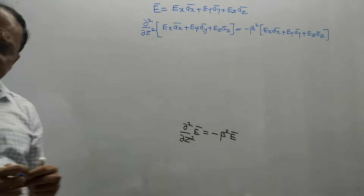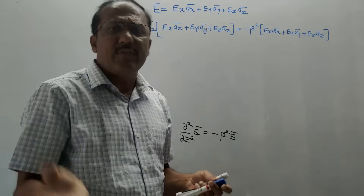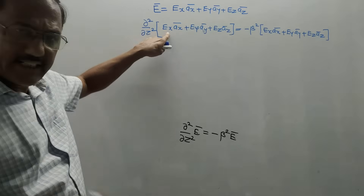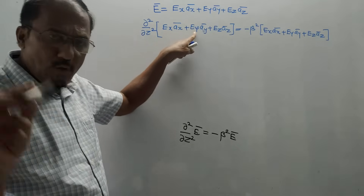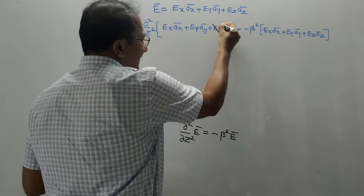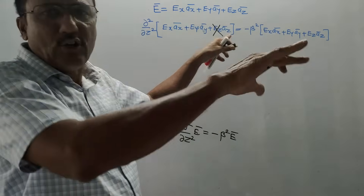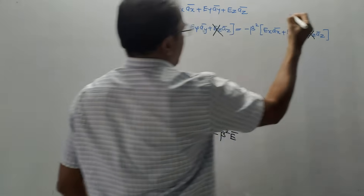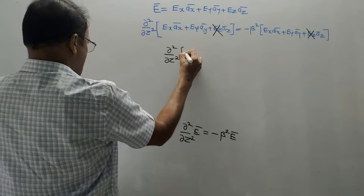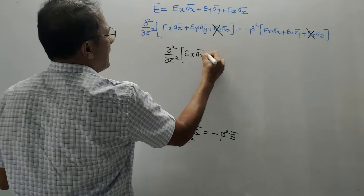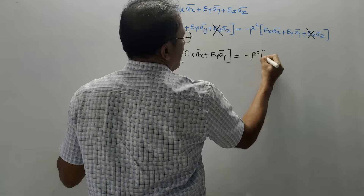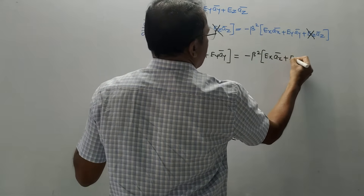We discussed that the wave power is along the z-direction, which means E-bar and H-bar cannot be along z. Since Ez is the component of E-bar along z, and the wave is along z, there should be no Ez term — the electric field can be along x or y but not along z. So the Ez term is deleted from both sides of the equation.